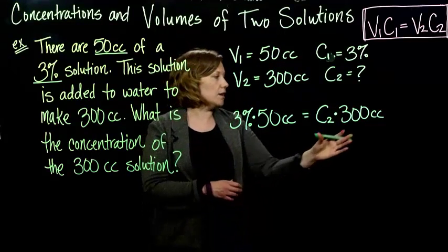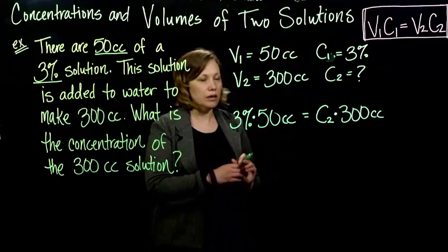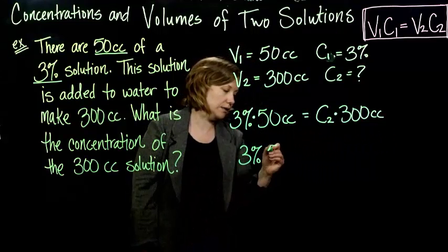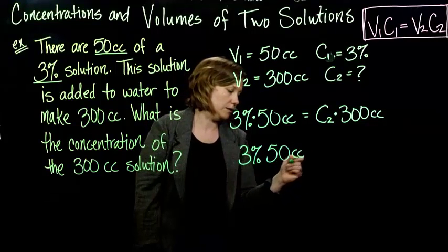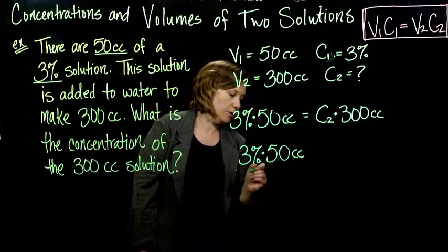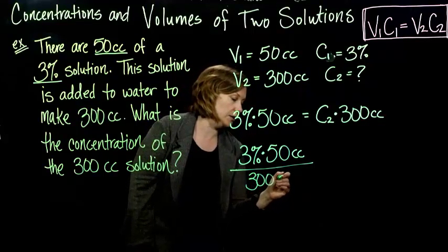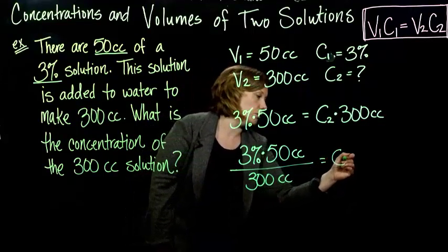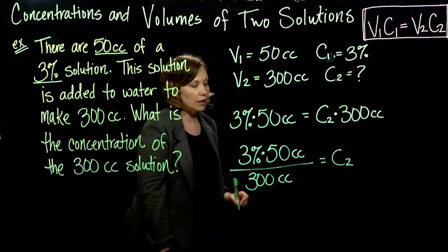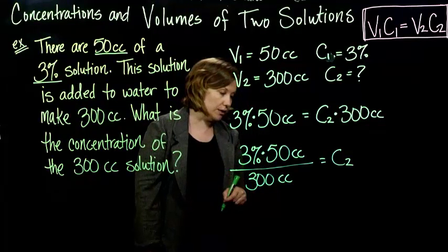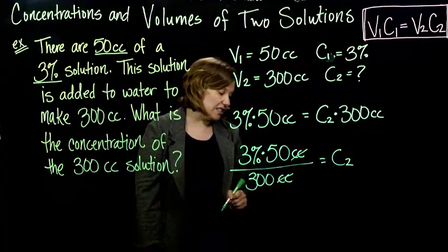Alright, so now I just have to solve for C2, so I'm going to divide by 300 cc's on both sides. So I have 3% times 50 cc's divided by 300 cc's is equal to C2. And when I do all of the division, you could change this percent to a decimal.